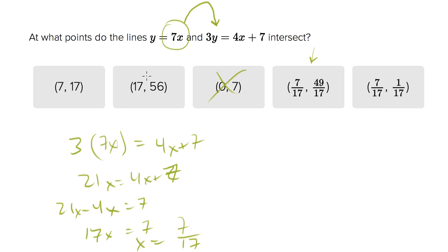There's two answer choices that have that, so we need to plug x equals 7 over 17 back in to one of these equations. So let's do the simpler one.